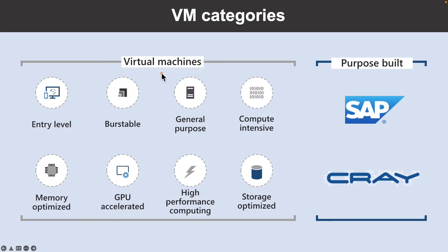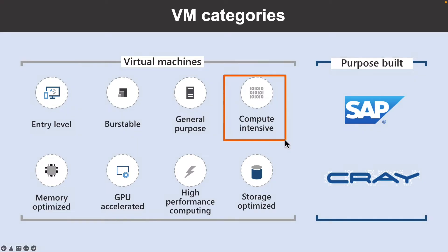The third type, and the most commonly used, is general purpose. This provides a balanced CPU-to-memory ratio and is ideal for testing and development, small to medium databases, and low to medium traffic web servers. The next type is compute intensive, which offers a high CPU-to-memory ratio. These virtual machines are good for medium traffic web servers, network appliances, batch processes, and application servers.